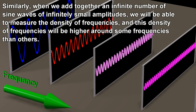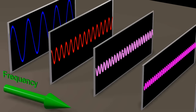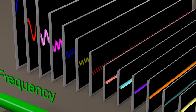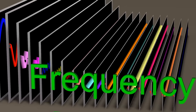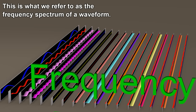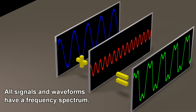Similarly, when we add together an infinite number of sine waves of infinitely small amplitudes, we will be able to measure the density of frequencies, and this density of frequencies will be higher around some frequencies than others. This is what we refer to as the frequency spectrum of a waveform. All signals and waveforms have a frequency spectrum.